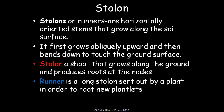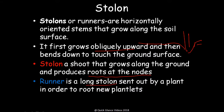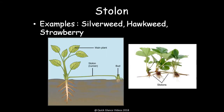Stolon, or runners — the difference between stolon and runners is slight. Stolons are horizontally oriented stems that grow along the soil surface, first growing obliquely upward then bending down to touch the ground. A stolon is a root that grows along the ground and produces roots at the nodes. Runners are longer stolons sent out by the plant to root new plantlets. Examples include silver weed, hawkweed, and strawberry, where roots and buds emerge at nodes parallelly along the ground.